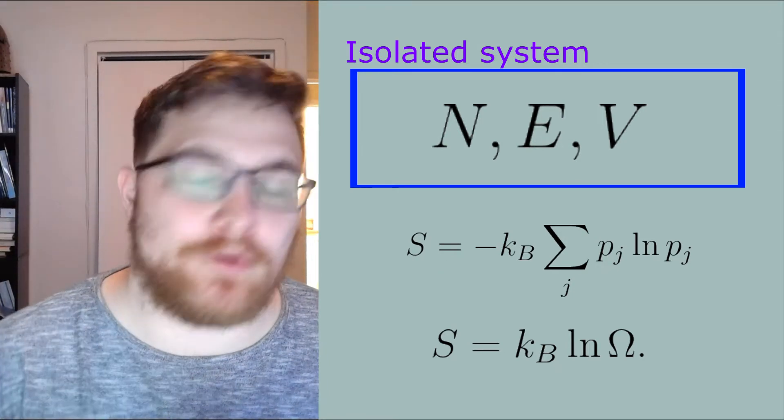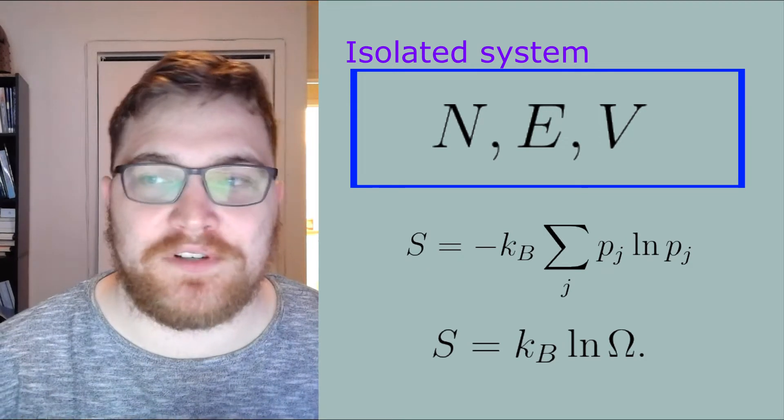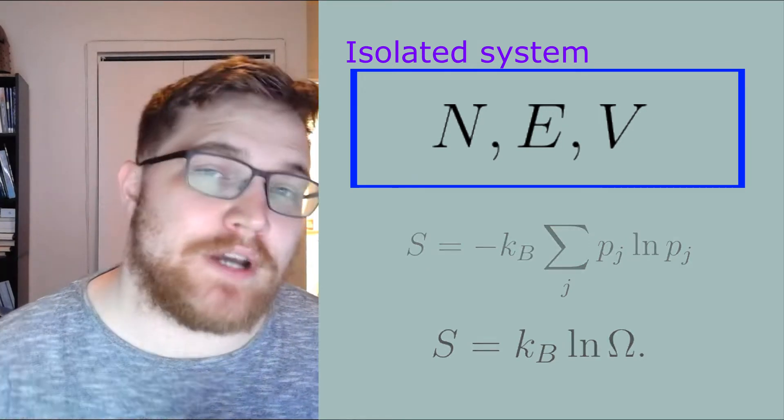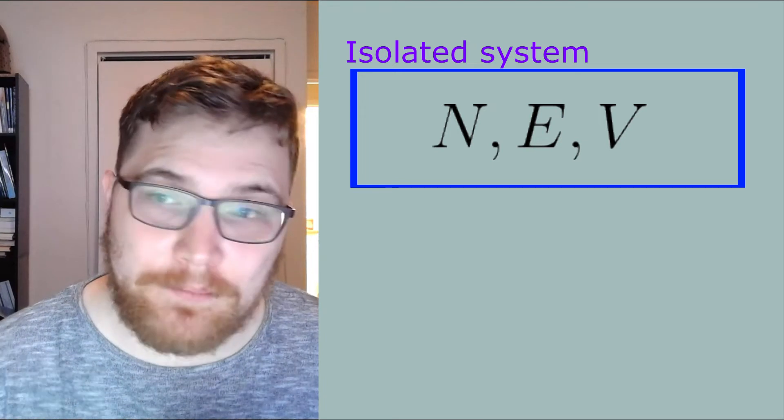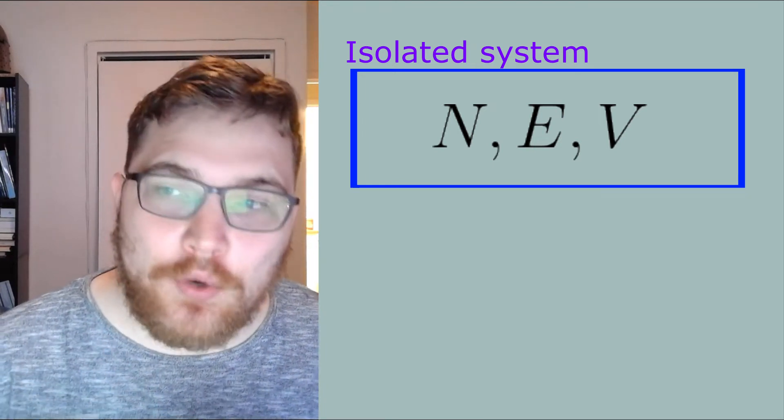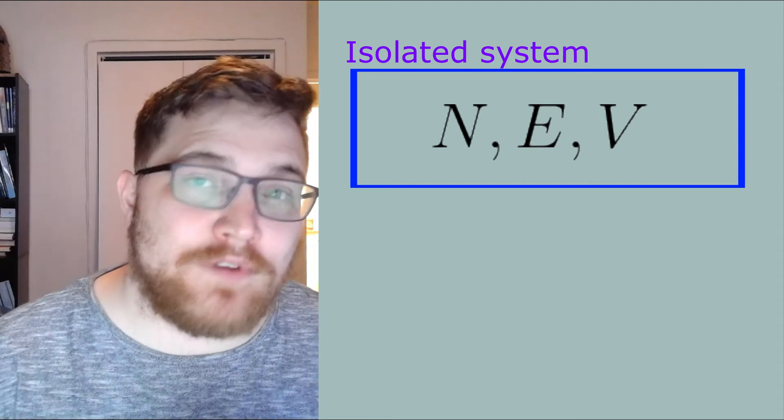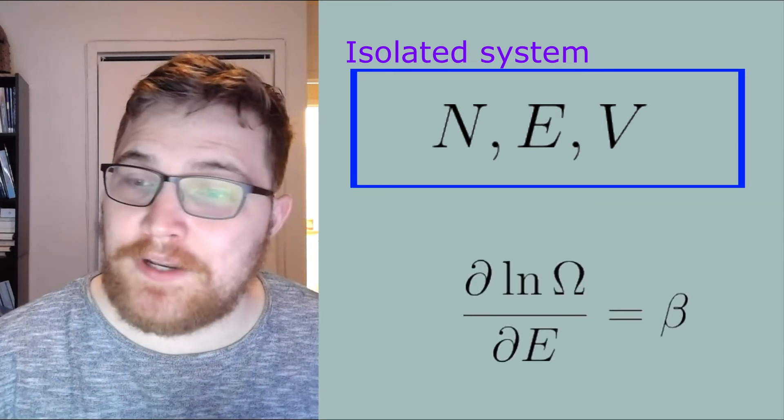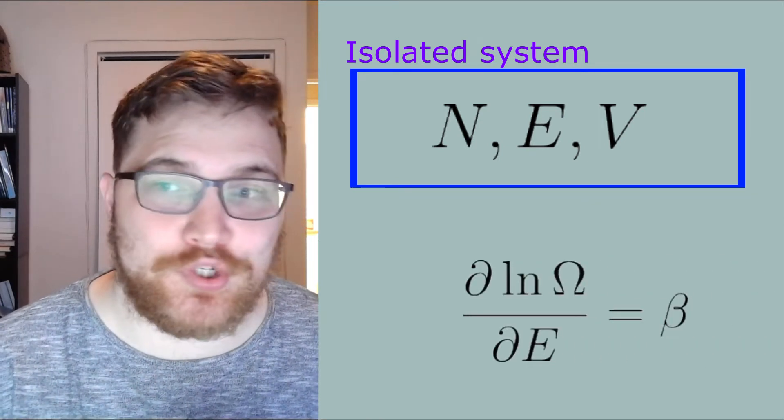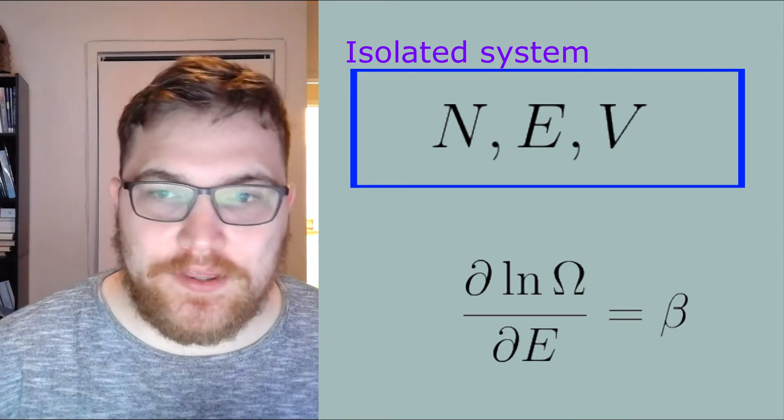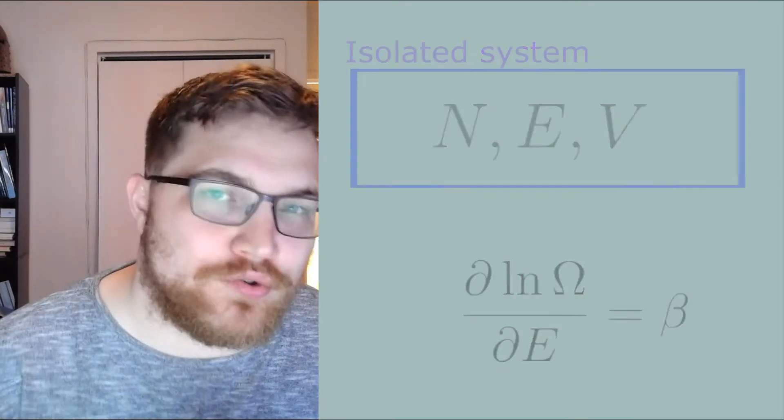We can then proceed to use our thermodynamic relations in terms of energy and entropy to calculate other quantities like specific heat or temperature. For example, we can express the inverse temperature beta as a derivative with respect to the Boltzmann entropy in terms of the energy itself. Calculations in the microcanonical ensemble are usually looked at and indeed are significantly harder than other ensembles.